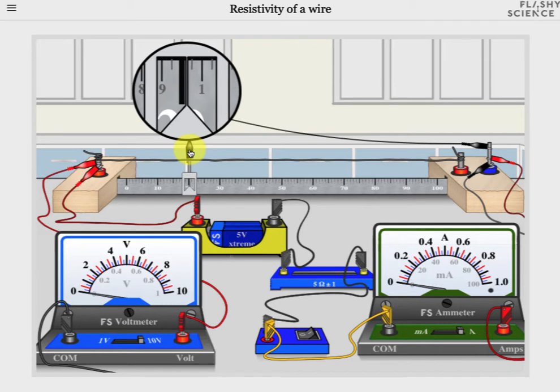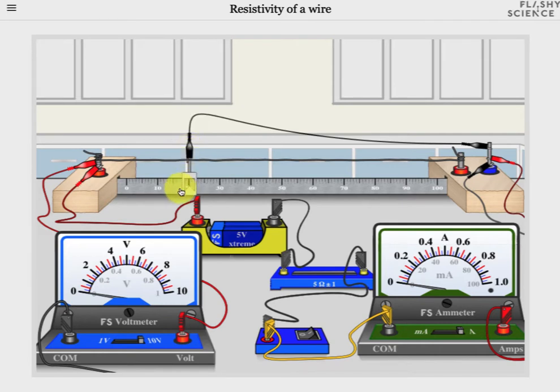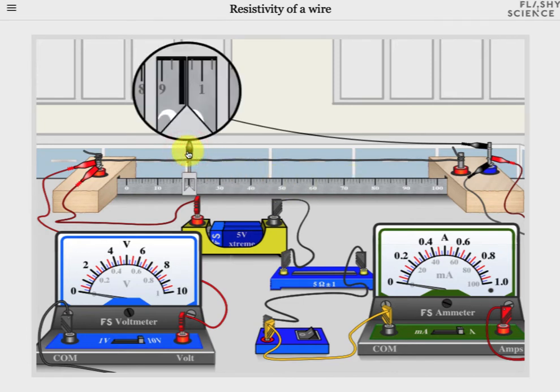Beneath the wire is a ruler with a centimeter scale. Clicking on the crocodile clip opens up a zoomed view of the ruler so you can make precise measurements of the crocodile clip position.